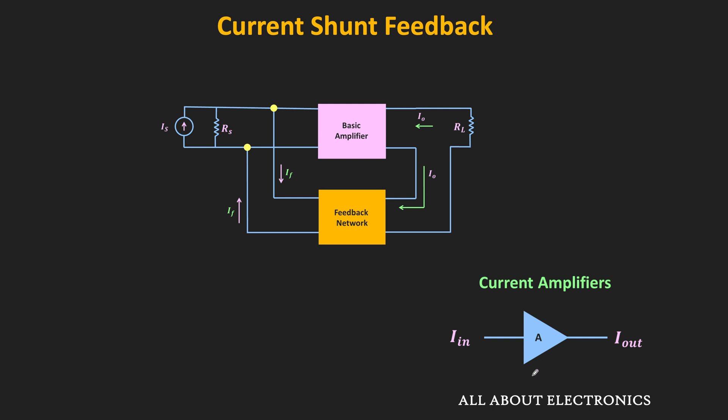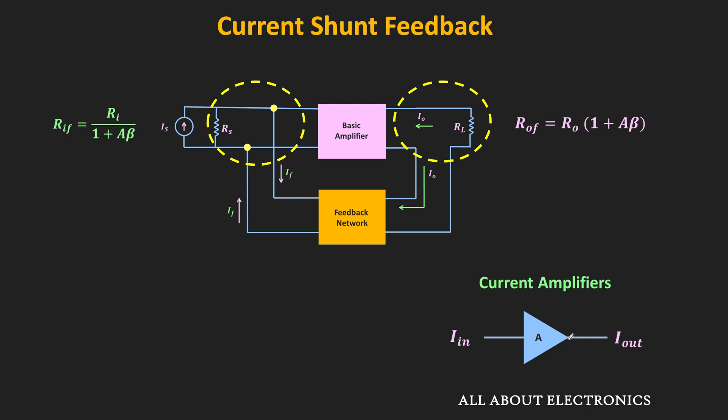Here, A refers to the current gain of the feedback amplifier. So in this feedback topology, on the output side, since we have the series connection, the output impedance of this feedback amplifier increases. And similarly, on the input side, since we have the shunt connection, the input impedance of this feedback amplifier will reduce by the factor of 1 plus Aβ, where A is the current gain of the basic amplifier and β is the feedback factor.